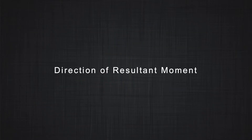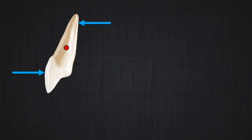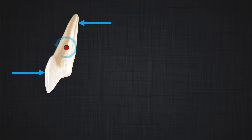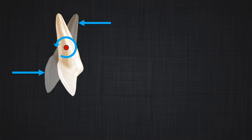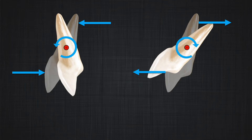Rule number two: if you want to change the direction of the moment, just change the direction of your couple. In the left side of the screen, application of the couple produces a counterclockwise moment. On the right side, if we just change the direction of the forces, application of the couple will produce a clockwise rotation. By changing the sense of the forces, we can produce opposite direction moments.